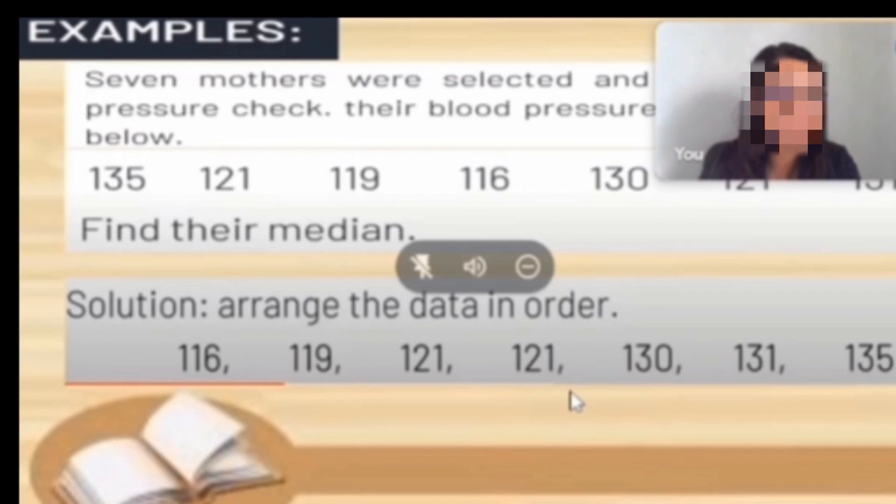We have 7 numbers. Our formula is n plus 1 divided by 2. 7 plus 1 equals 8 divided by 2, so the answer is 4. Now class, where is our 4th number? Here: 1, 2, 3, 4. Therefore, our median is 121. That is our median.